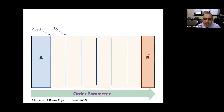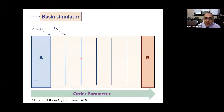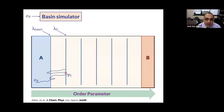In FFS, this is achieved by partitioning the intermediate region using level sets of the order parameter, and by recursively calculating the flux of trajectories that leave A and reach each of these milestones. First you start with a representative configuration in A and feed it into what we call a basin simulator, which launches a dynamic MD trajectory and monitors for first crossings of lambda zero right after the trajectory has left A. You save configurations at each crossing, and the number of crossings per unit time gives you an effective flux of leaving A and reaching lambda zero.